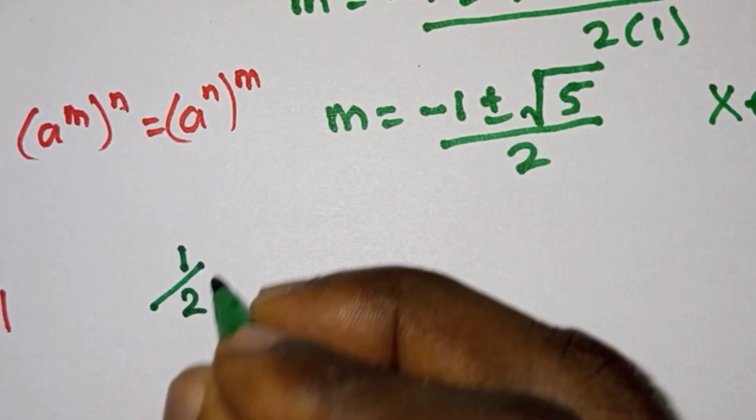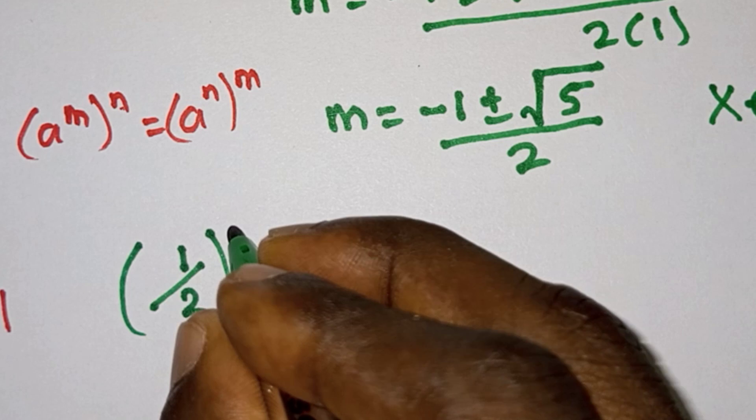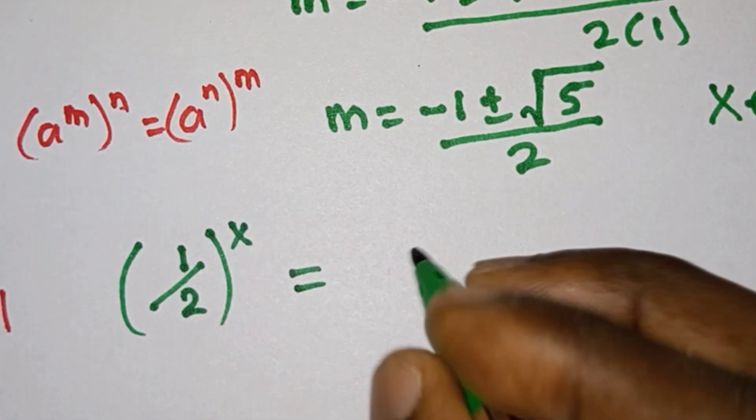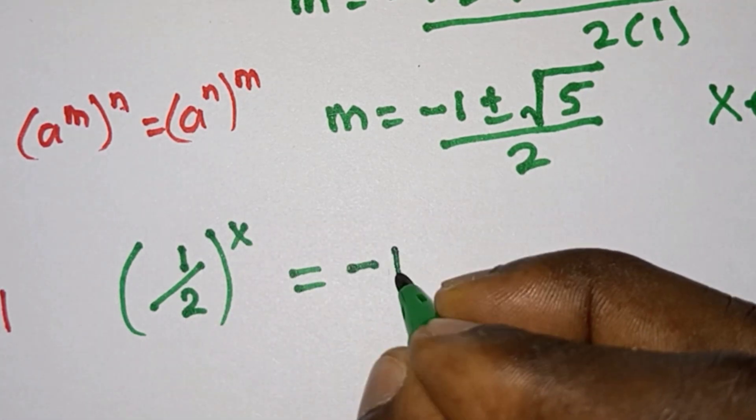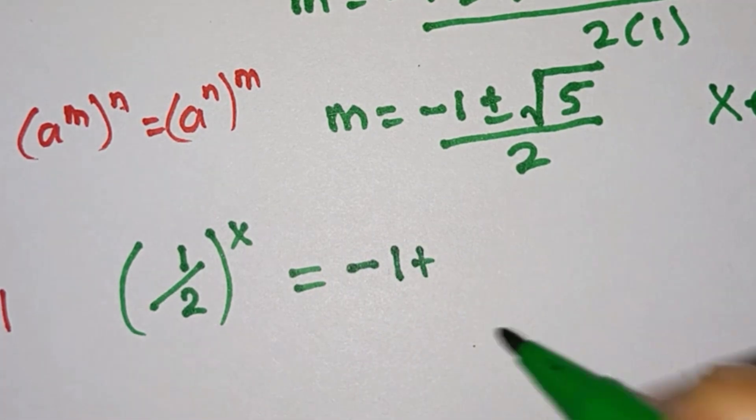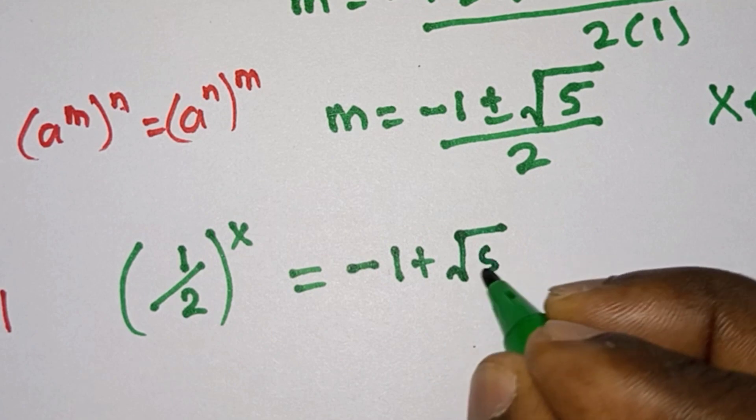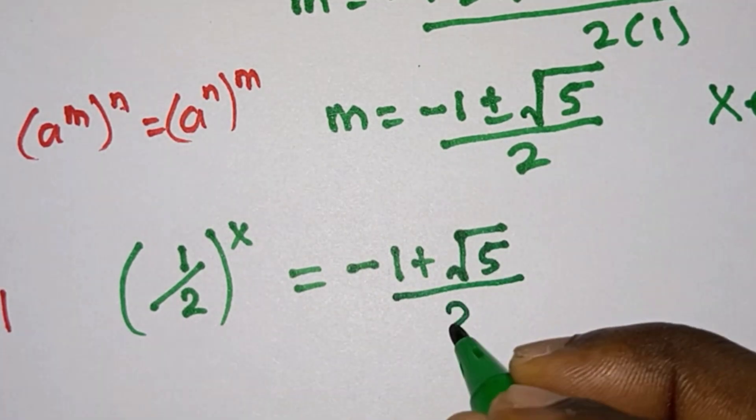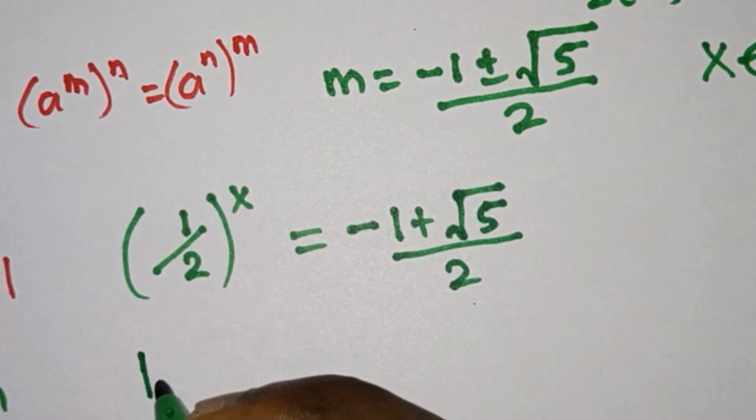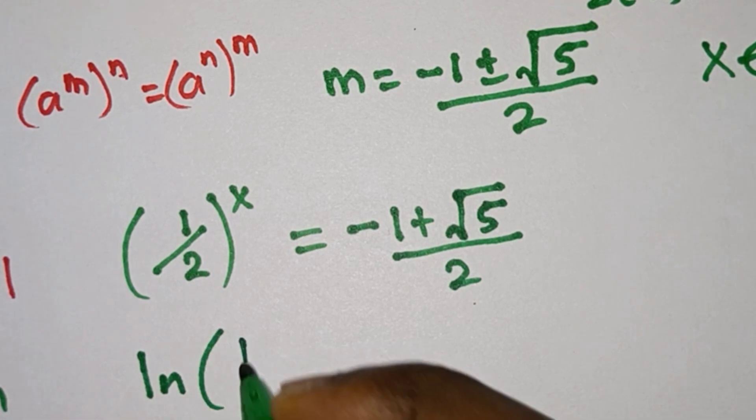Remember we let (1/2)^x equal m. So we have (1/2)^x = (-1 + √5)/2, considering the positive side first.